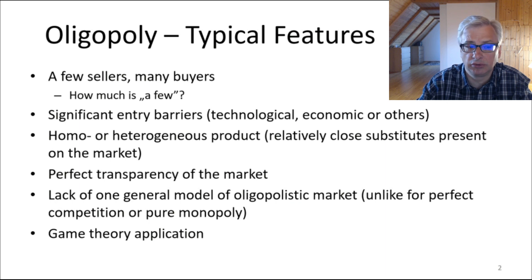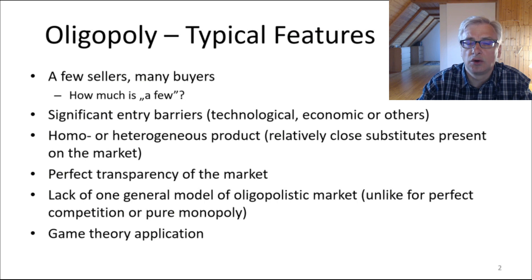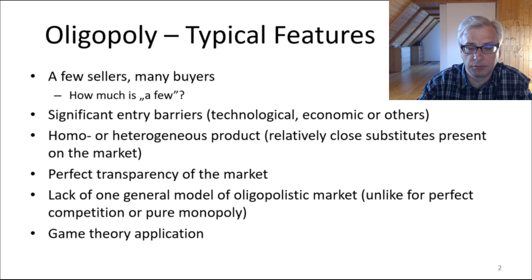The product in an oligopolistic market can be homogeneous, like oil for instance, or it could be heterogeneous, like mobiles or cars. Nevertheless, even if it's a heterogeneous product, we see relatively close substitutes in the market — like mobiles again: they are of different brands but they are essentially similar and serve similar purposes. We will assume perfect transparency of the market for our convenience and simplification.